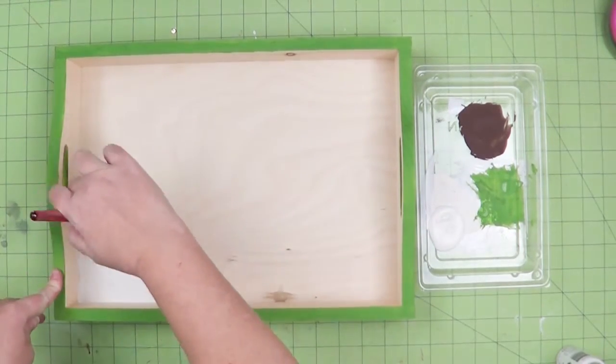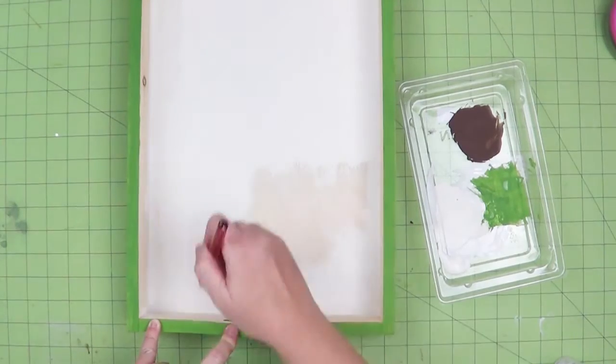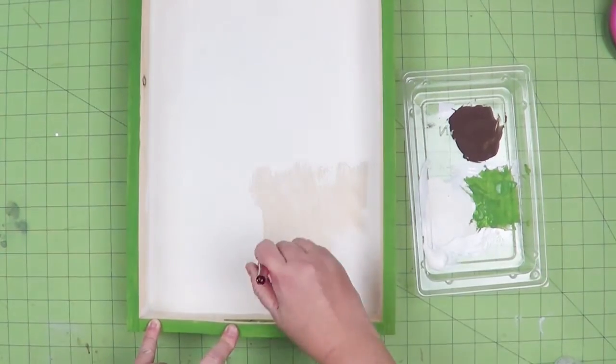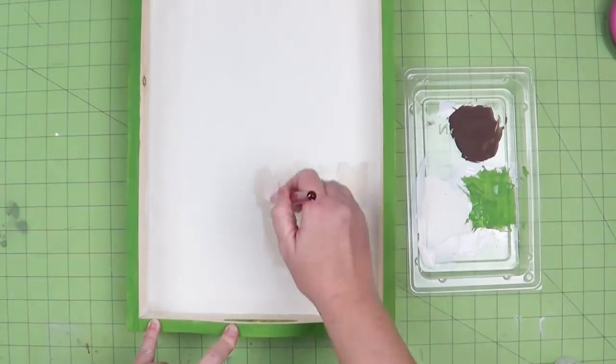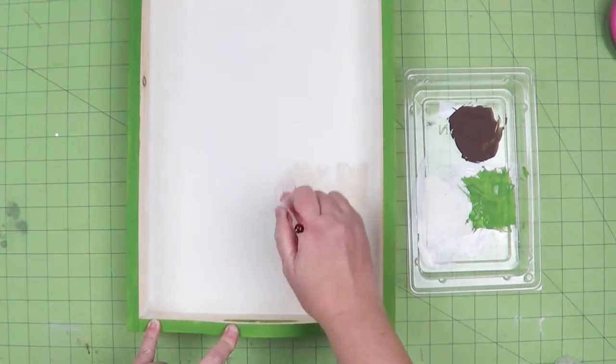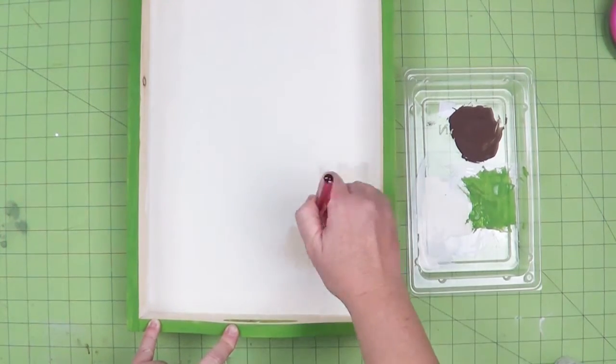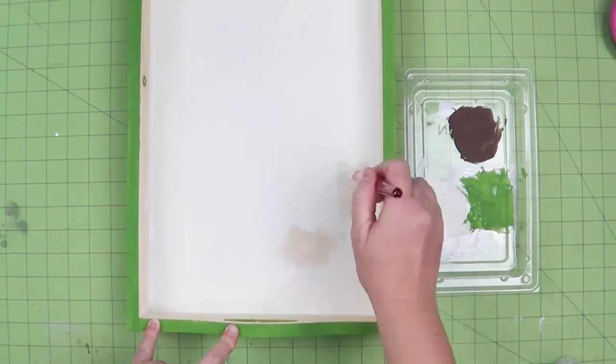The supplies you will need to make this project are a Walnut Hollow serving tray, Creative VersaTool from Walnut Hollow, pliers, acrylic paint, sponge brushes, black carbon copy film, tape, and a pencil.